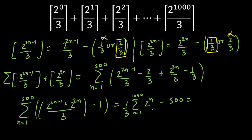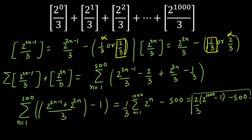The sum of the GP is: the first term 2, times (2 raised to power 1000 minus 1), divided by (2 minus 1), giving 2 raised to power 1001 minus 2. So the final answer is (2 raised to power 1001 minus 2) divided by 3, minus 500. And that will be all.